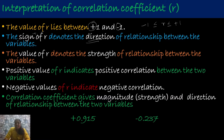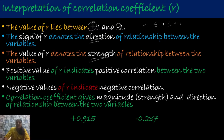If it is positive, there exists a positive correlation between the two variables. If it is negative, there exists a negative correlation between the two variables. And the value of R denotes the strength of relationship between the two variables. So, correlation coefficient gives the magnitude and direction of relationship between the two variables.